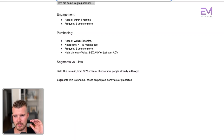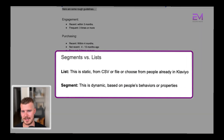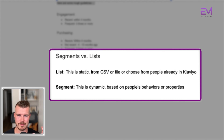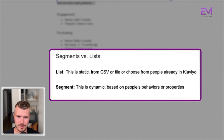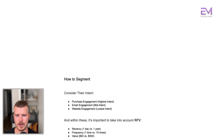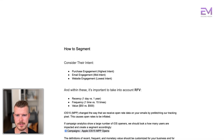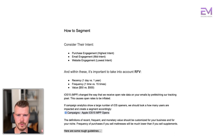Just to reiterate: the difference between segments and lists — lists are static, from CSV files or existing Klaviyo contacts. Segments are dynamic and based on people's behaviors or properties. All of these things are how we build out segments. I hope you got a lot out of this video — this is one of the most important you'll watch.